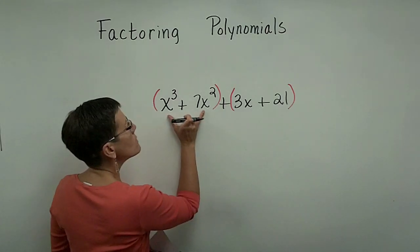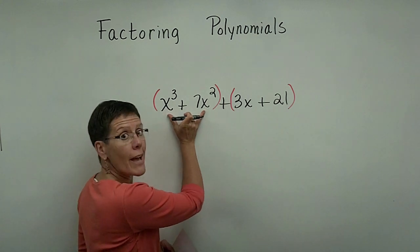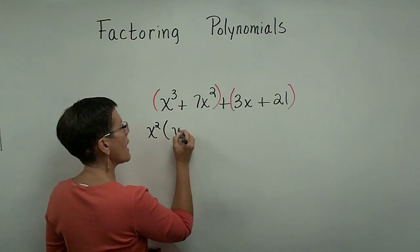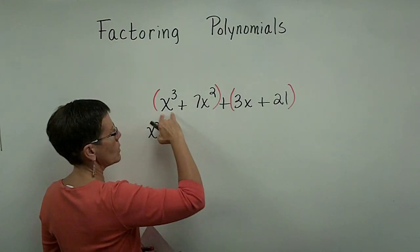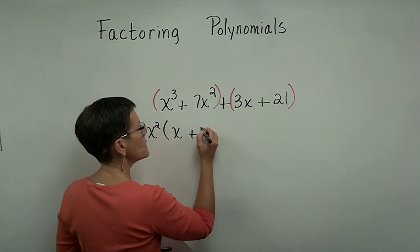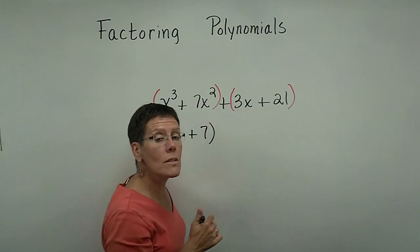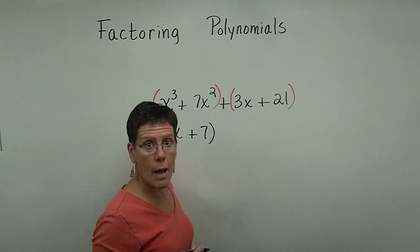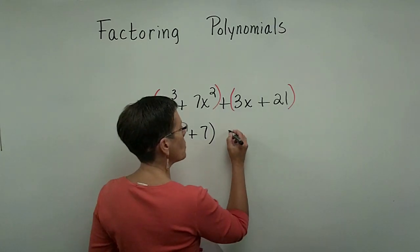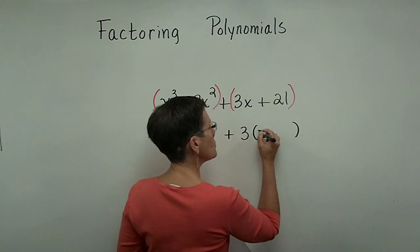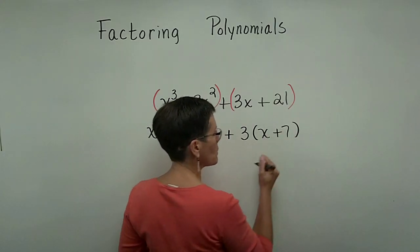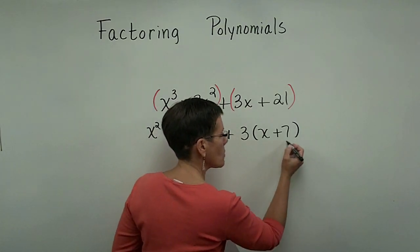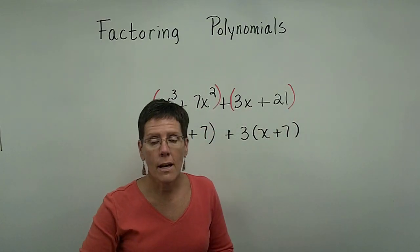These 2 terms share a common factor of x to the 2nd power. We'll factor that out, and inside the parentheses we'll need an x here so that x squared times x is x cubed, and then we'll need a 7. Then we'll do the same thing with the 2nd group. In this group, 3 is the greatest common factor, so we'll factor out a 3, and we would be left with x plus 7 when we checked it. Does 3 times x give us 3x? And does 3 times 7 give us 21? And it does.